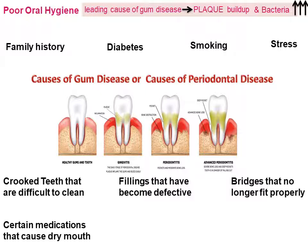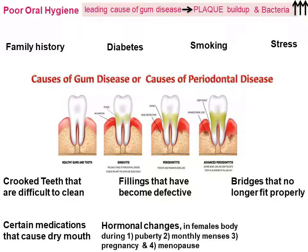Certain medications reduce saliva, causing dry mouth, and saliva has a protective effect on the gums and teeth. Hormonal changes in females during puberty, monthly menses, pregnancy, and menopause make gums more sensitive, so gingivitis develops easily. Poor nutrition, including deficiency in vitamin C, is also a cause of periodontal disease.